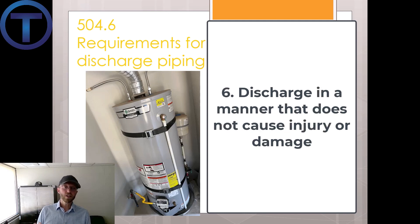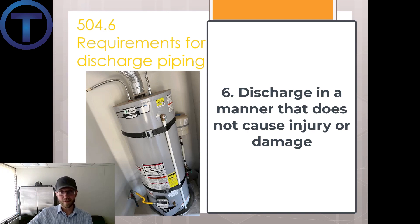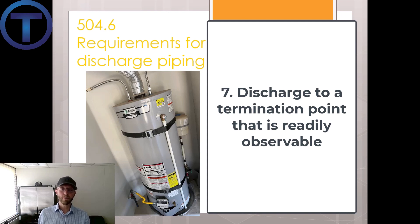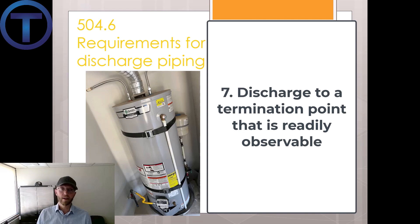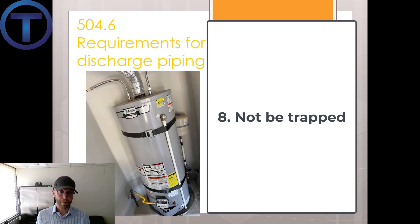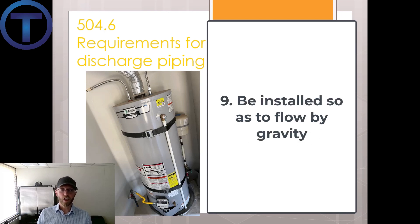Number six: it should discharge in a manner that does not cause personal injury or structural damage — so when approaching it while it's going off, you won't be hurt. Number seven: it should discharge to a termination point that is readily observable by the building occupants, because you should be able to see when it's opening and water is being discharged — that indicates a problem. Number eight: this discharge pipe shall not be trapped. Number nine: it shall be installed so as to flow by gravity.